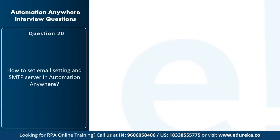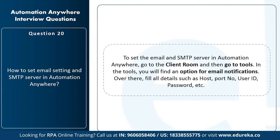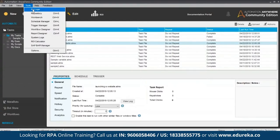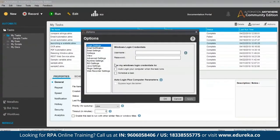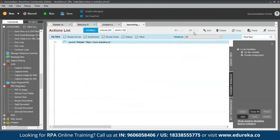The next question is: how to set email settings and SMTP server in Automation Anywhere? Go to the client, then go to Tools, where you'll find an option for email notifications. Fill in details such as host name, port number, user ID, and password. Let me demonstrate: go to Tools > Options > Email Settings, mention the host and port number, and click OK. That's how you set up email and SMTP server for email automation.